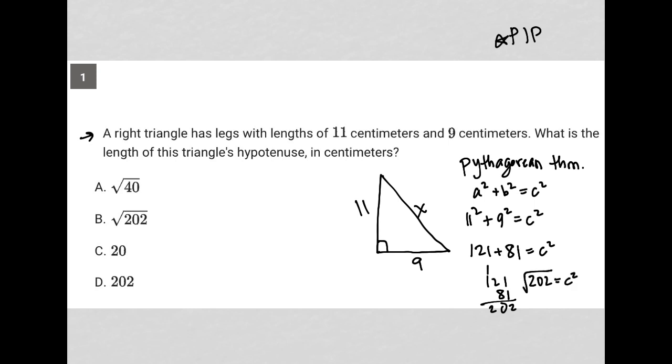And then, of course, to solve for c, I'd have to square root both sides, and I'd get c is equal to the square root of 202. So our answer here must be choice b.